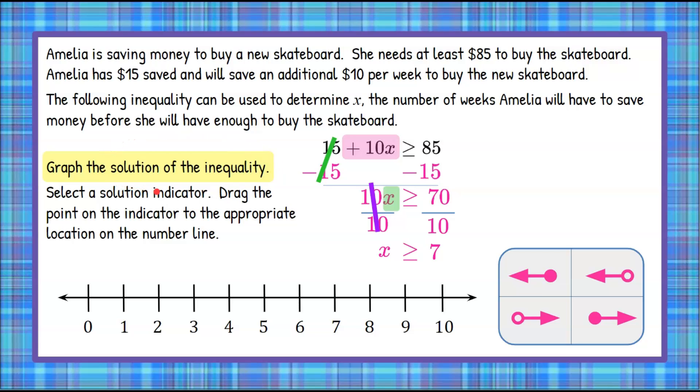But they want us to graph our solution. So we need to identify which of these four arrow indicators we're going to use. We want to know whether it's an open or closed circle first. Because it can be equal to, it's going to be a closed circle.